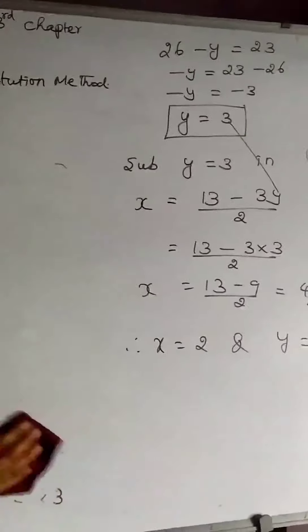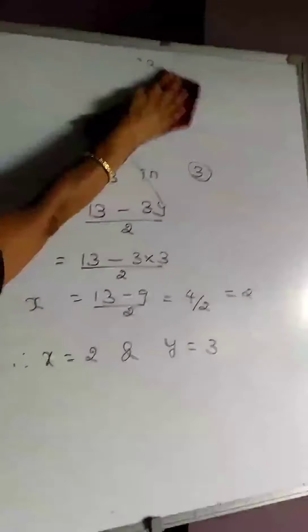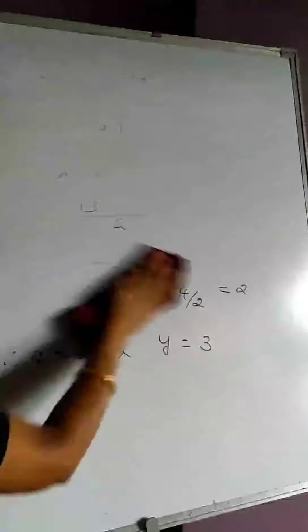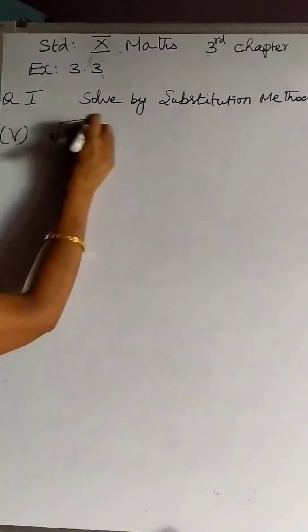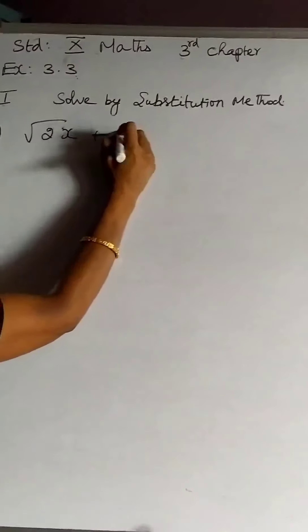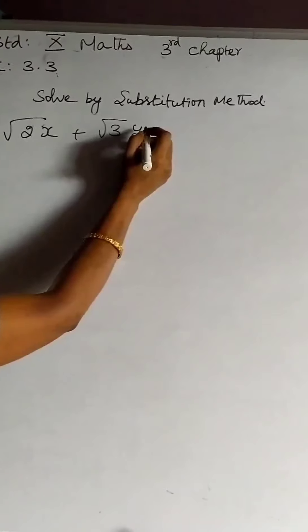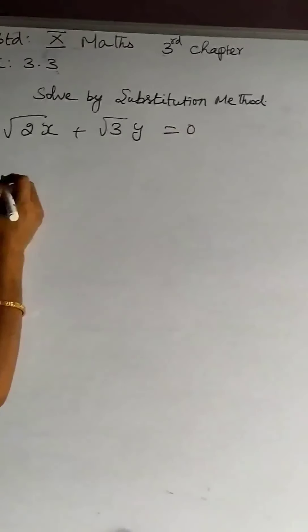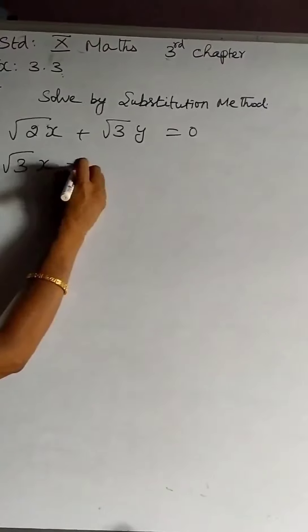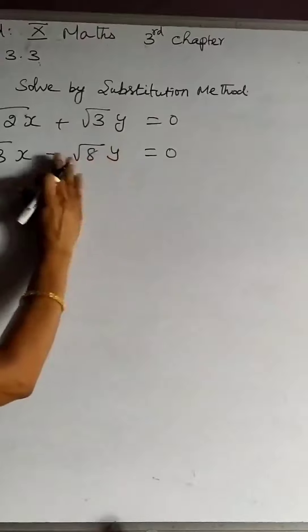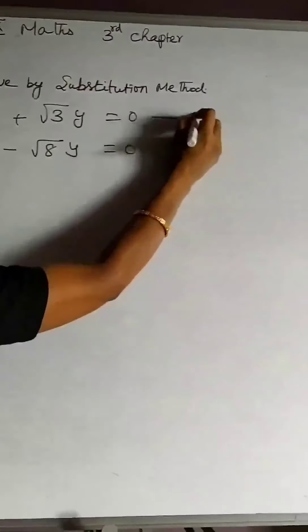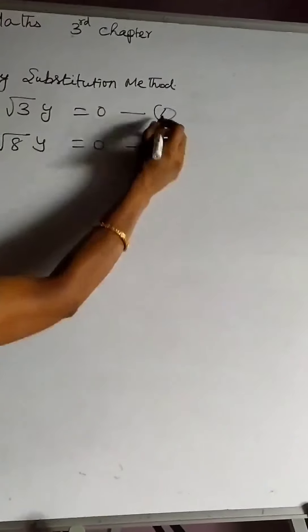We go to the next sum — Question 1, fifth sum. Here you find some irrational numbers, but nothing is difficult. It is similar to the previous sum we solved. The equations are: √2·x + √3·y = 0 and √3·x − √8·y = 0. Here nothing is left over to simplify like the previous sum, so I directly take the given equations as equation 1 and equation 2.